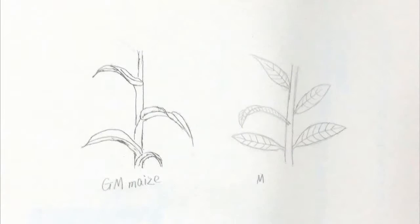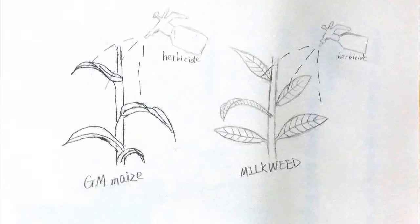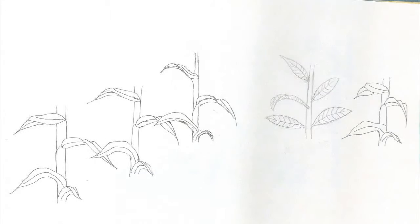Genetically modified crops such as GM corn can withstand certain herbicides. However, the milkweed dies when people use this herbicide.